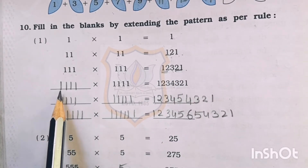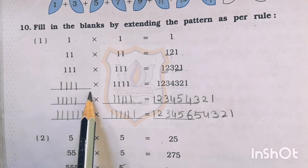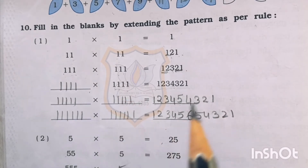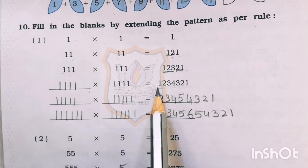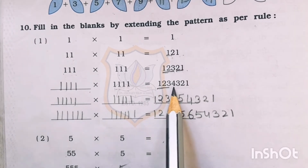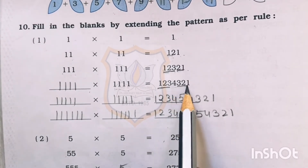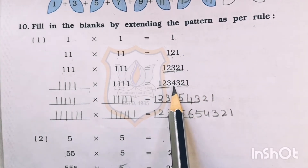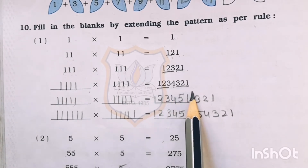Now 4 times 1 we will take: 1111 multiplied by 1111. The answer will be 1, 2, 3, then this 1, 2, 3 in reverse order as 3, 2, 1, and in place of 3 we will write 4 in the middle. So the answer is 1, 2, 3, 4, 3, 2, 1.